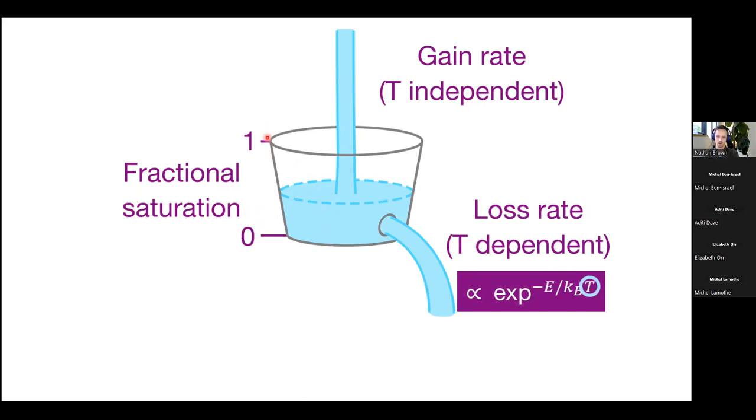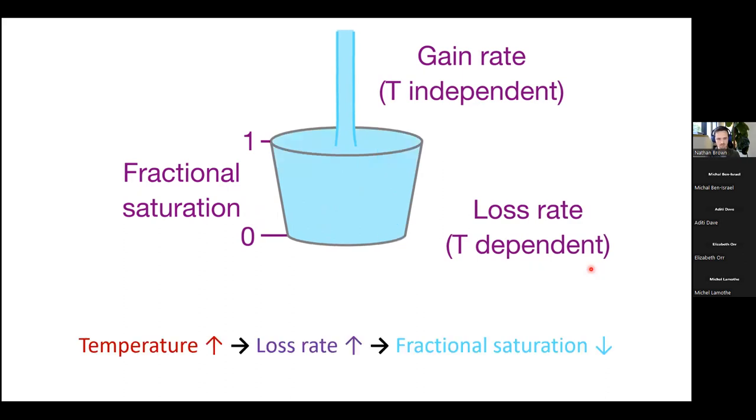This would be the activation energy or the trap depth of your luminescent signal that you're targeting. This is just the Boltzmann constant that relates the two. So it goes like this. As the temperature of your grain increases, the loss rate increases. So you could think of the hole in the bucket getting bigger. And as it does, then your fractional saturation level will begin to decrease.